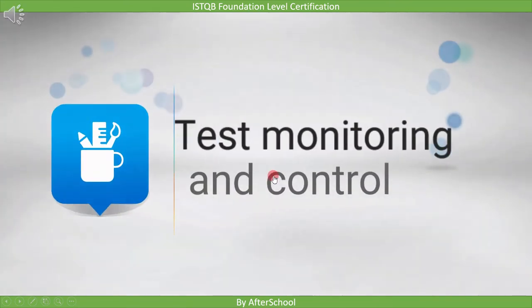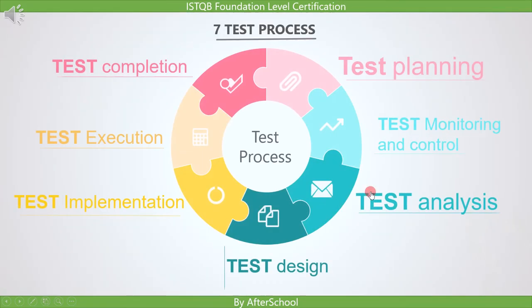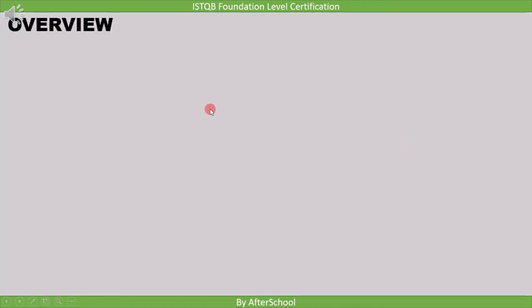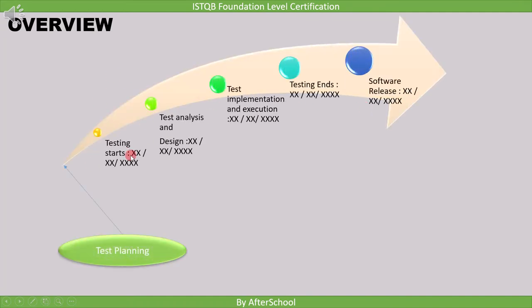In this lecture, we will discuss test monitoring and control. Test monitoring and control is the second test activity of test planning. As we know, test planning draws the roadmap for the test activity, which includes scheduling, like when testing will start, when it will end, and similarly for all other test activities.